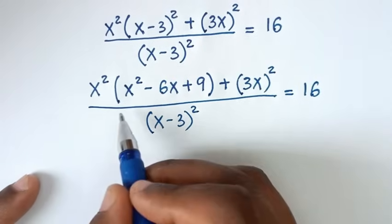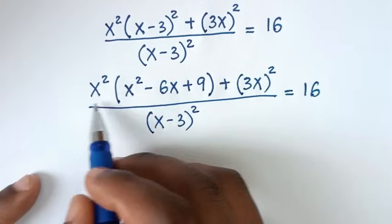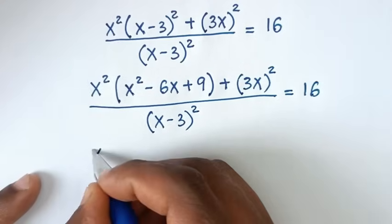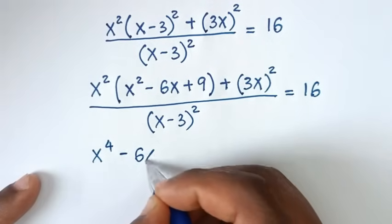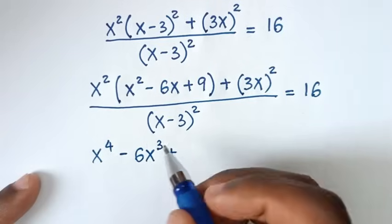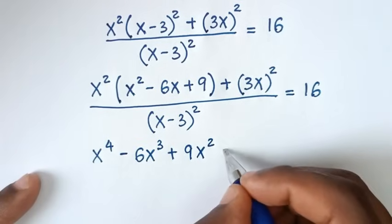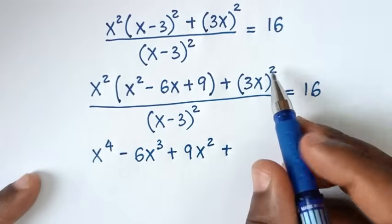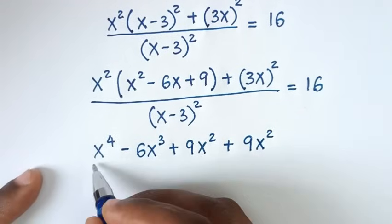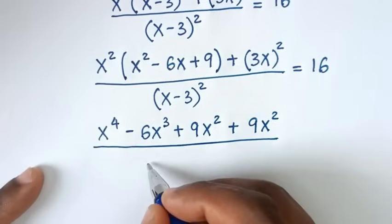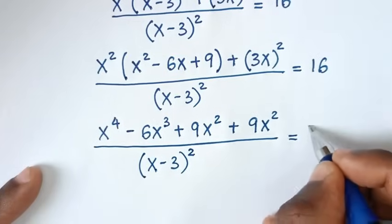In the next step, we'll open the brackets. Multiplying x square through gives x square times x square is x to the power of 4, x square times negative 6x is negative 6x to the power of 3, and x square times 9 is 9x square. Then opening the 3x bracket square gives 3 square which is 9, times x square, giving 9x square. All over x minus 3 bracket square, equal to 16.